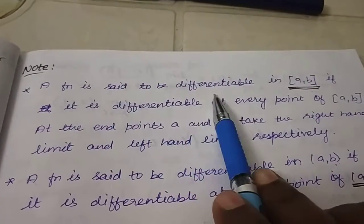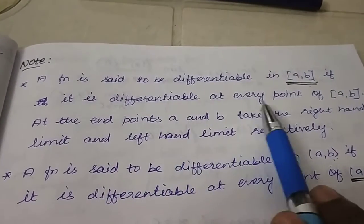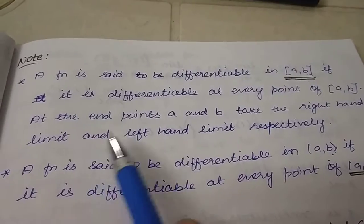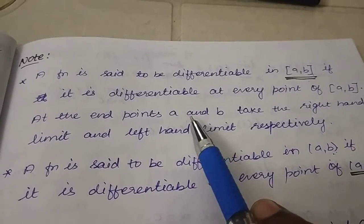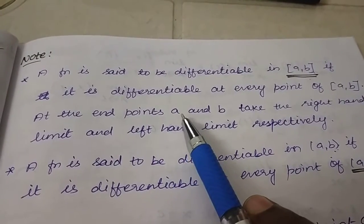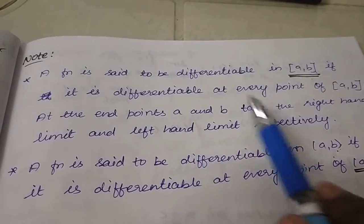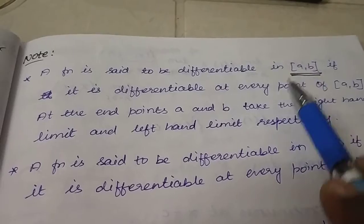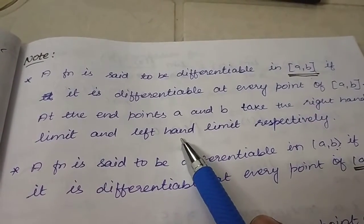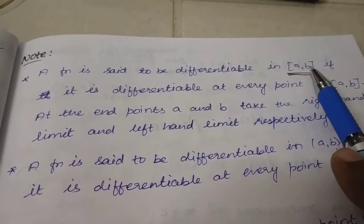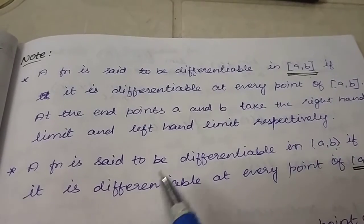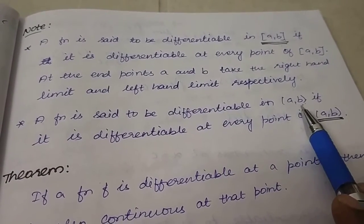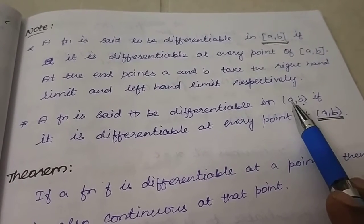A function is said to be differentiable on [a, b] if it is differentiable at every point of (a, b). At the endpoints a and b, we take the right-hand limit and left-hand limit respectively. So for point a, we take the right-hand limit (a+), and for point b, we take the left-hand limit (b−), then check whether the function is differentiable.